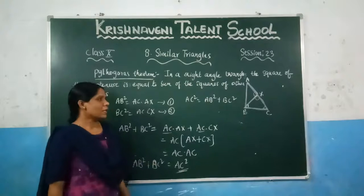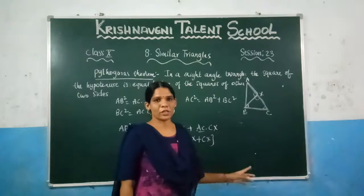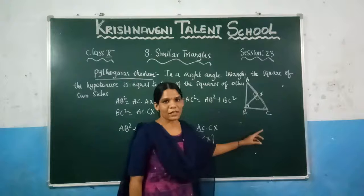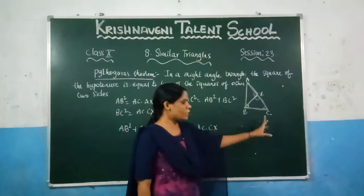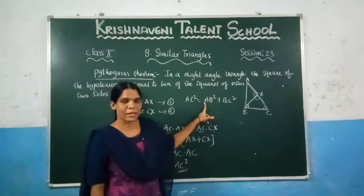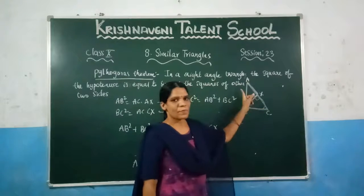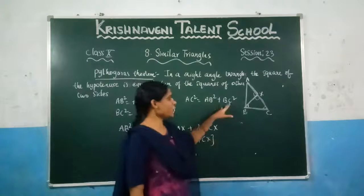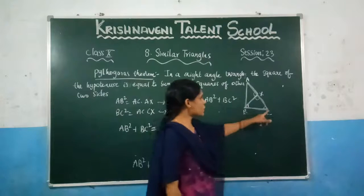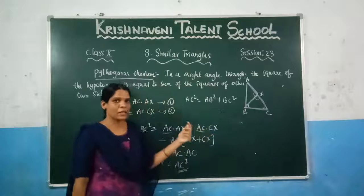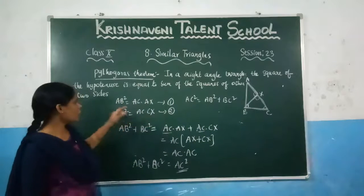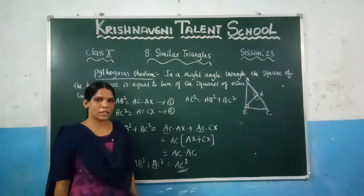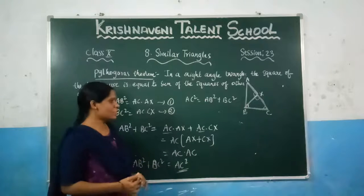This is what we needed to prove: in a right angle triangle, the square of the hypotenuse is equal to the sum of the squares of the other two sides. The hypotenuse AC is the longest side. We proved AC squared equals AB squared plus BC squared. To summarize: we chose triangles ABX and ABC containing AB, proved them similar, got equation 1. Then we chose triangles BCX and ABC containing BC, proved them similar, got equation 2. Adding both equations gave us AC squared equals AB squared plus BC squared. This is a very important theorem, and based on it we will solve the next exercises.